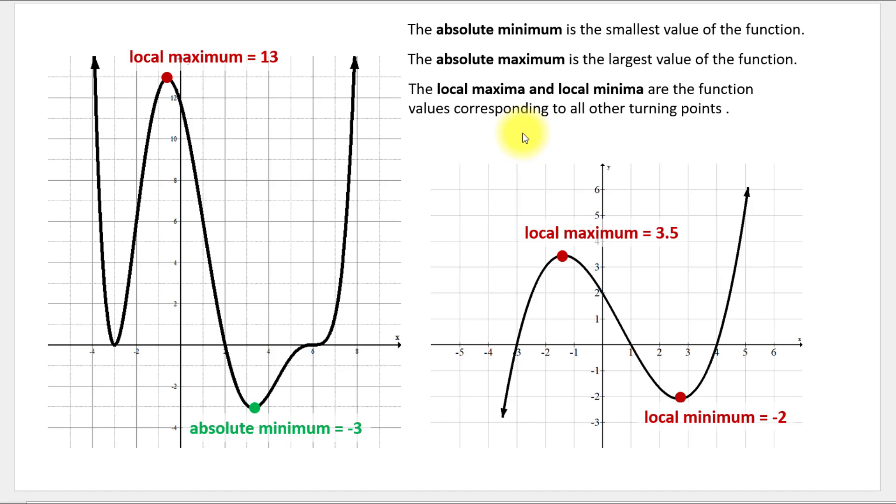So basically a graph of a polynomial function can have the absolute minimum and absolute maximum value. And the rest of the function values that correspond to different turning points will be local maxima and local minima.